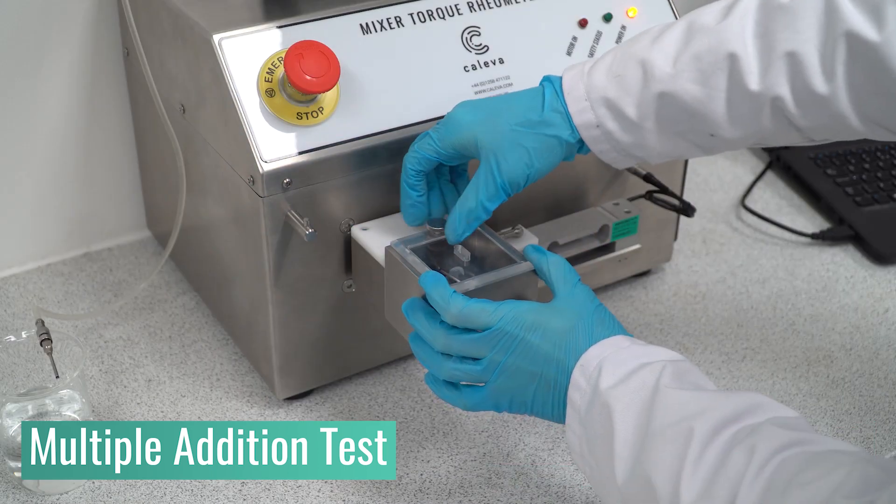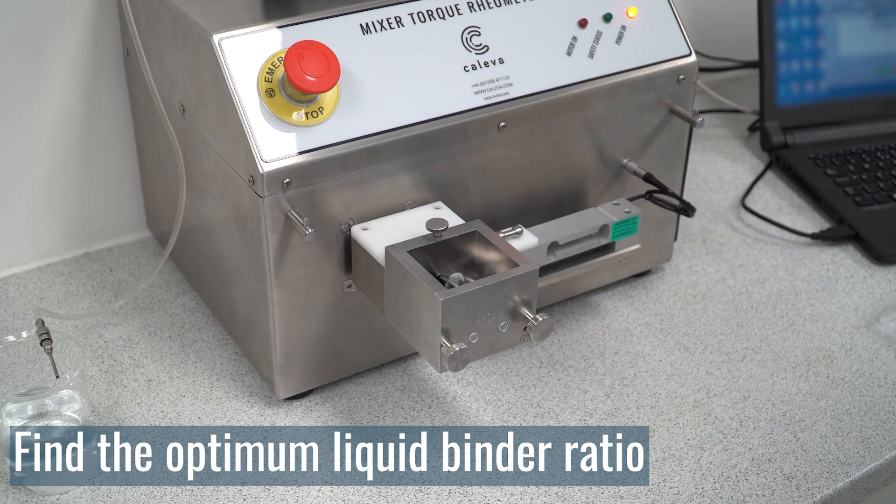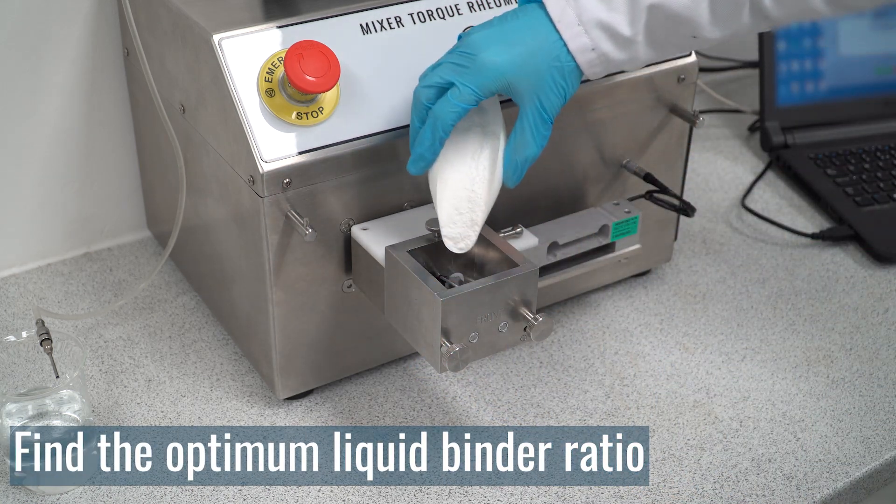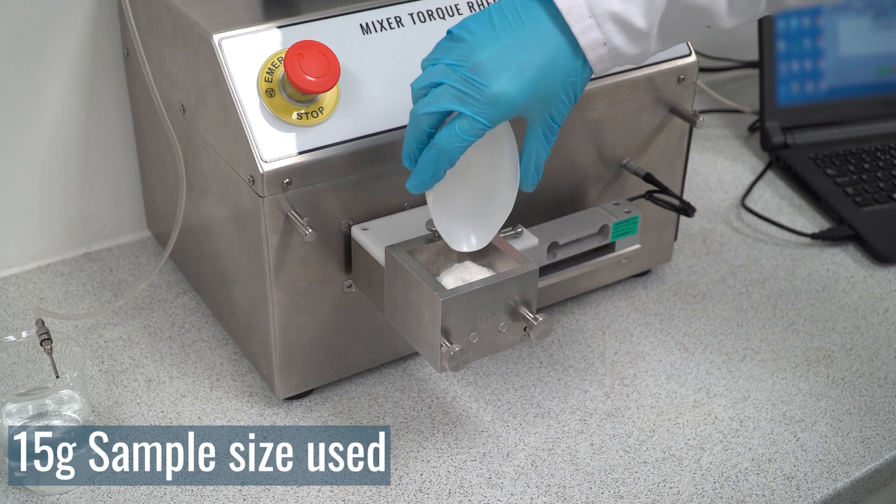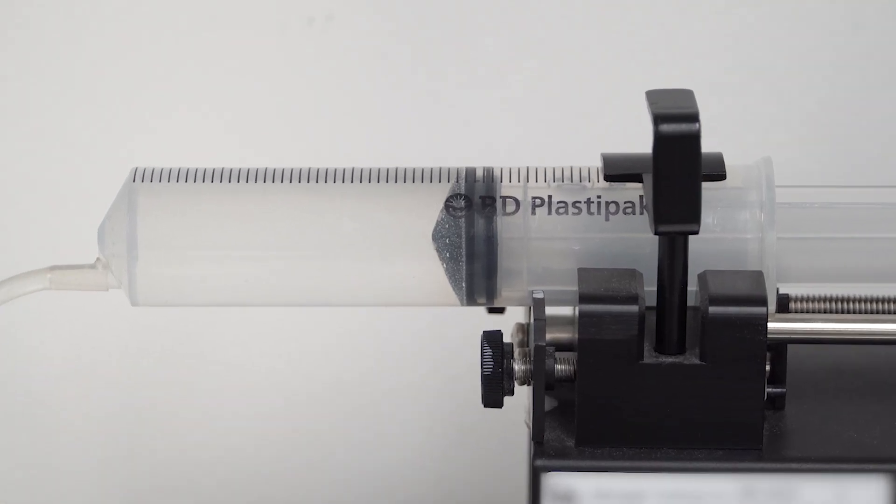Firstly, the multiple addition test will determine how much liquid binder your specific formulation needs for your desired result. In this experiment, a small sample of 15 to 40 grams of material is added to the mixer bowl and the automatic syringe pump is primed with liquid binder.